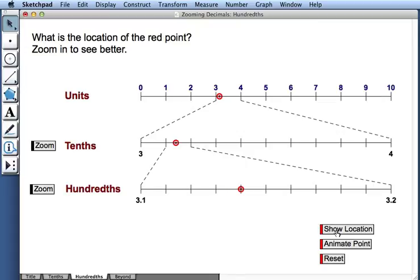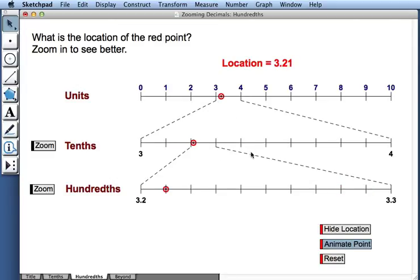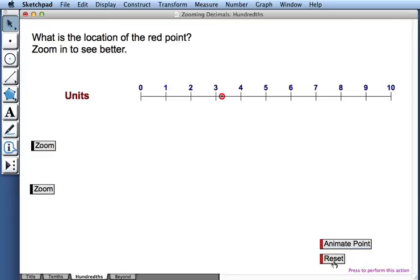As before, I can press show location. I can animate my point to watch it move along all three number lines simultaneously. I can press reset to return to just a single number line. And I can drag my point to any new location to create a new challenge.